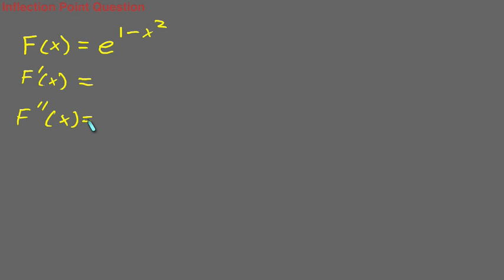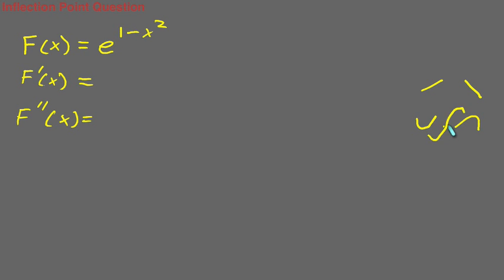The question we're answering today is: what is the inflection point of f(x) = e to the 1 minus x squared? To do inflection points, you need to take two derivatives. Your first derivative gives you information about increasing or decreasing, and your second derivative gives you information about concavity up or concavity down. The inflection point is the change from one to the other.